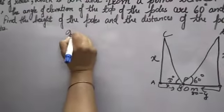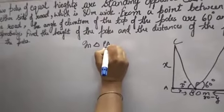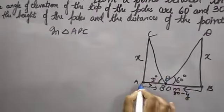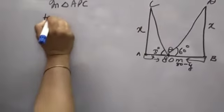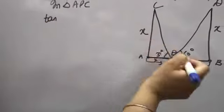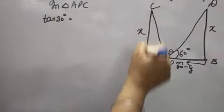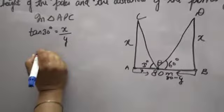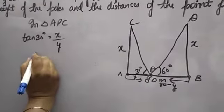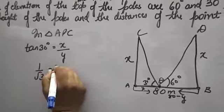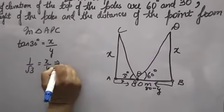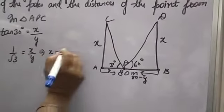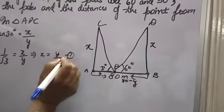In triangle APC, tan30° equals x over base y. Tan30° value is 1 by root 3. So x over y equals x value, x over root 3, first equation.